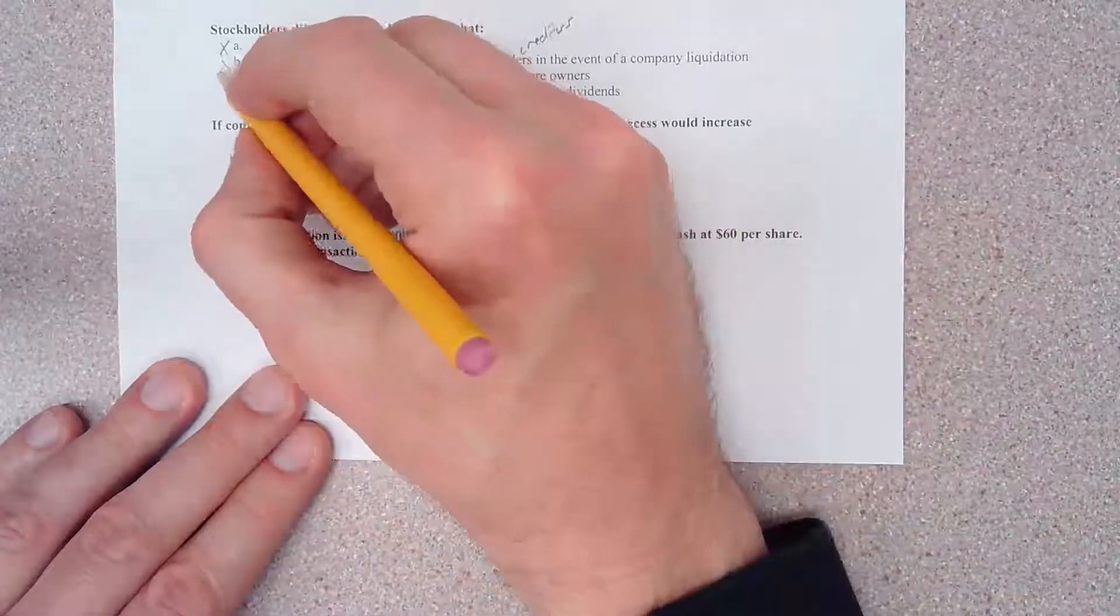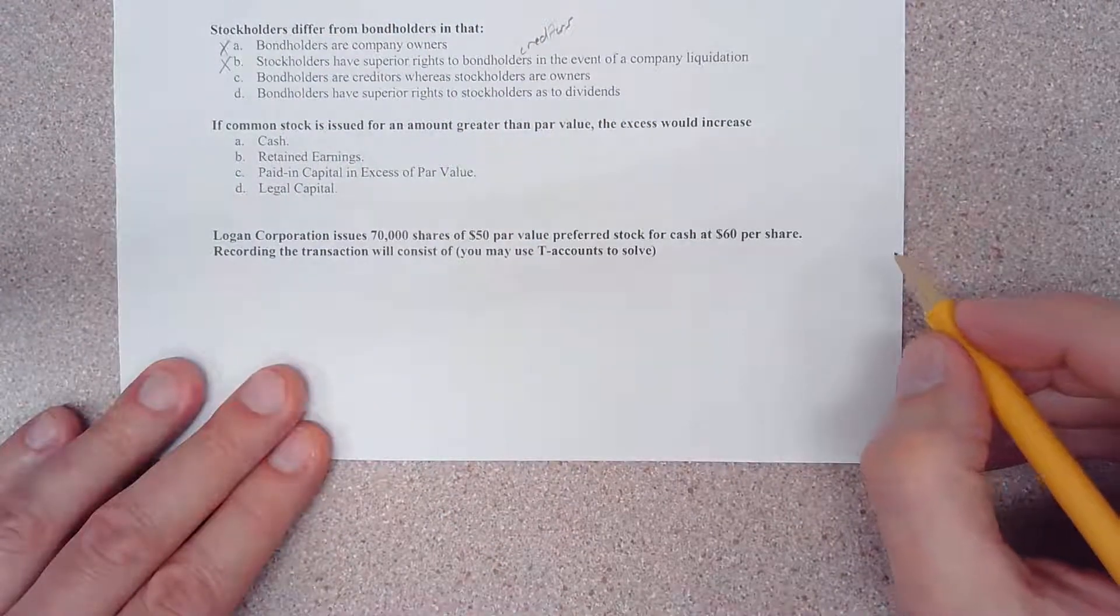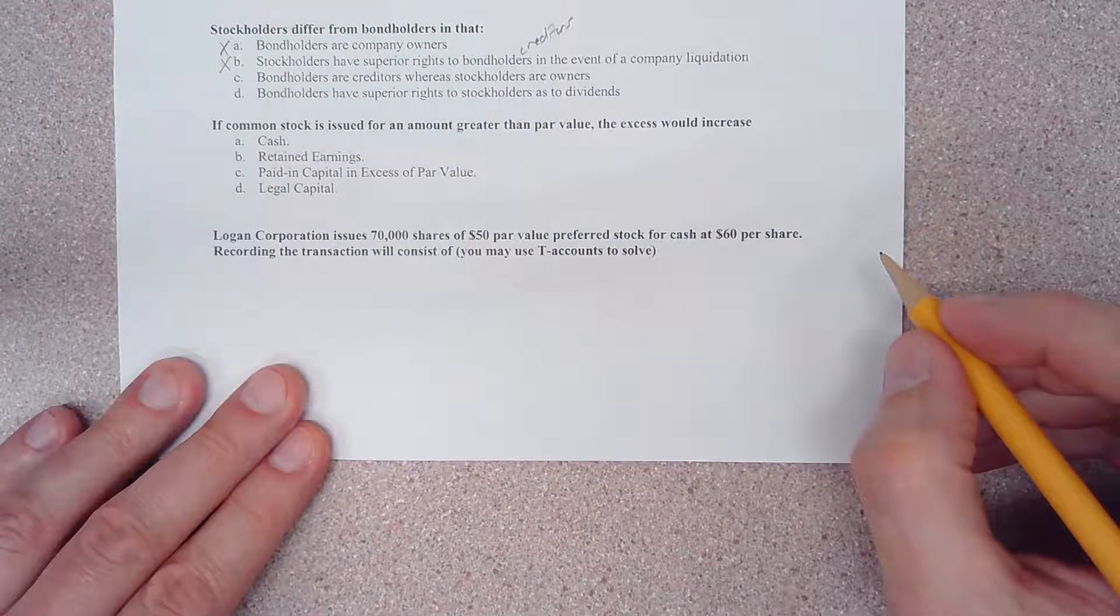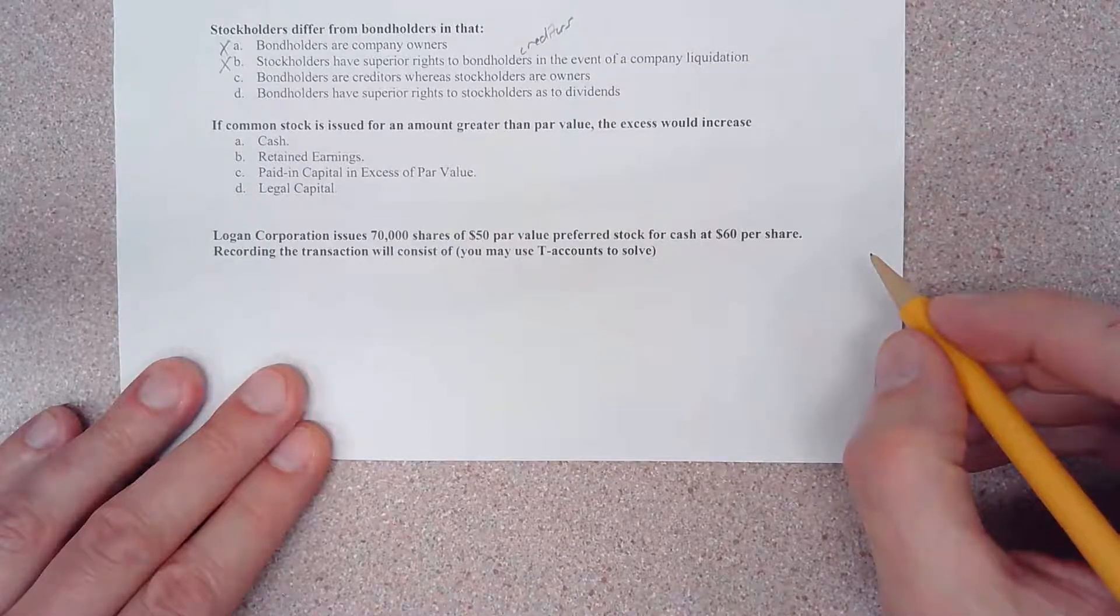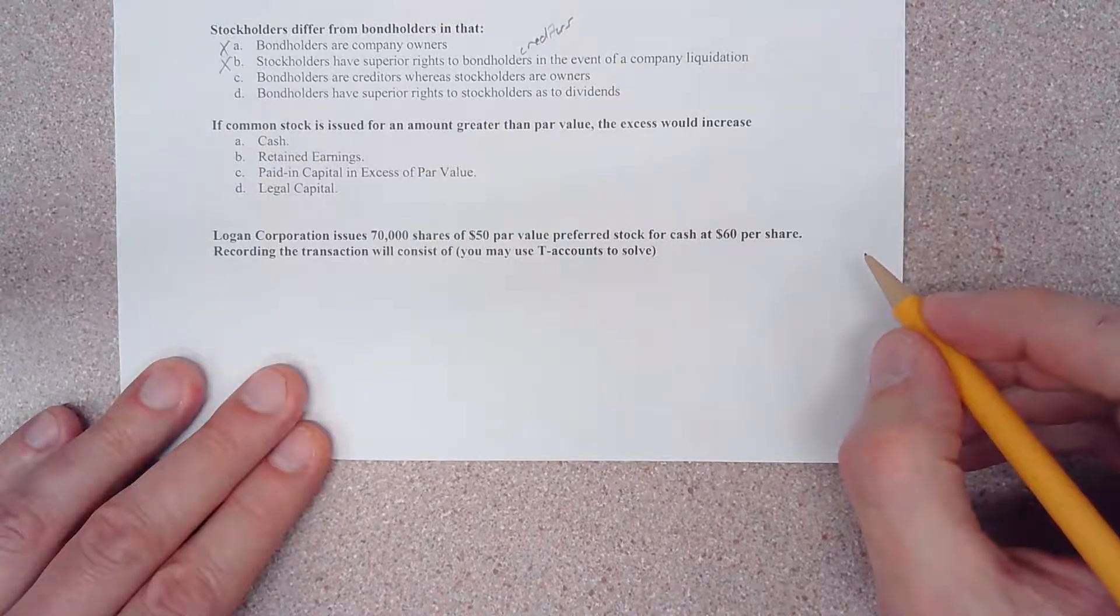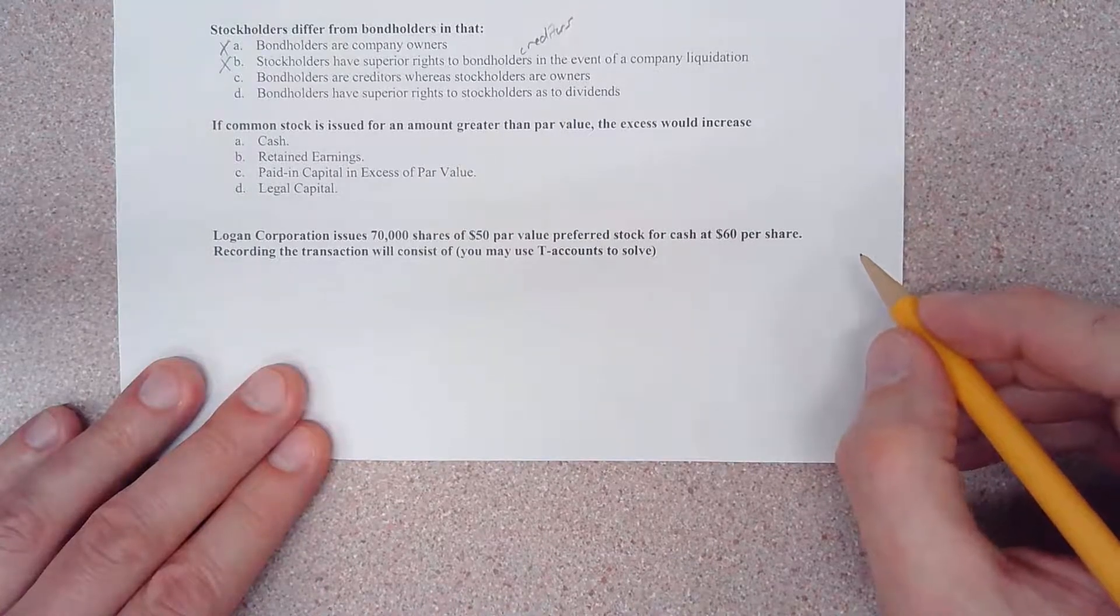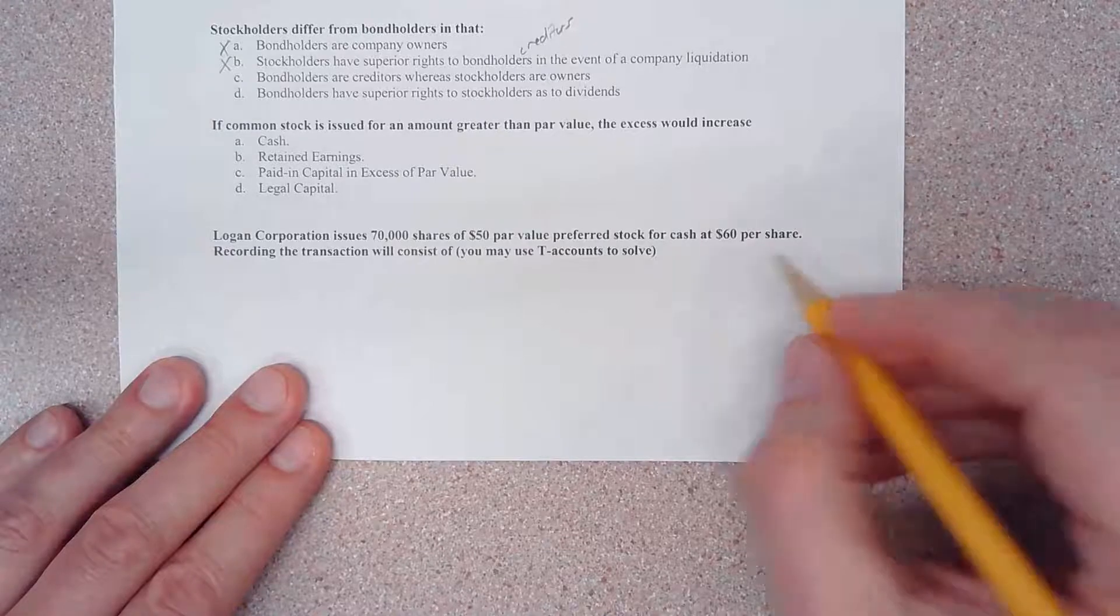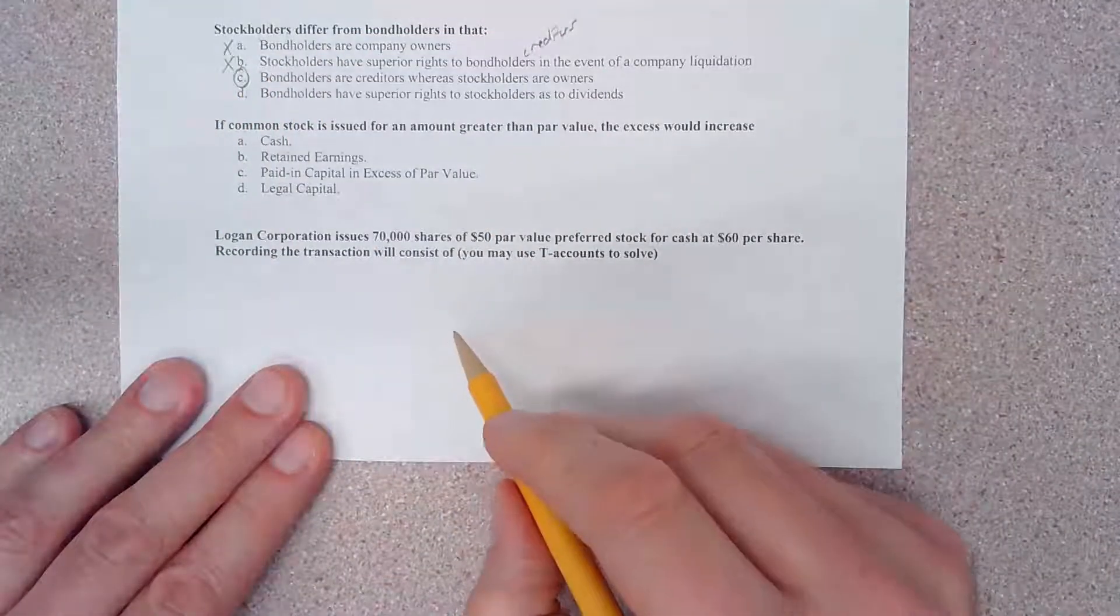So this statement is completely backwards and is also not our answer. Choice C says bondholders are creditors whereas stockholders are owners. Well, if you've been paying attention at all, you know that is a true and correct answer, so let's go ahead and circle it right now.